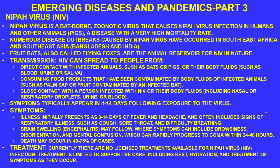Illness initially presents within three to 14 days with fever and headache, followed by signs of respiratory illness — cough, sore throat, and difficulty breathing. This can become very serious, as brain swelling — encephalitis — may follow, with symptoms of drowsiness, disorientation, and mental confusion. This can rapidly progress to coma within 24 to 48 hours.